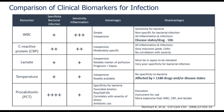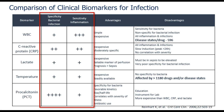Looking at commonly used biomarkers: white count specificity for bacteria is extremely low — it's elevated in any circumstance, with 596 drugs or diseases that can affect it. C-reactive protein is more specific but has similar problems and different kinetics. Lactate is a marker of hypoperfusion, not infection. Temperature — 1,180 things can drive it up or down. Procalcitonin, by contrast, is considered 94% specific for bacteria, and that's why it's different.